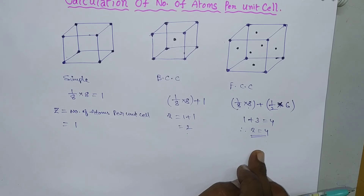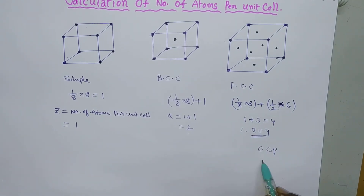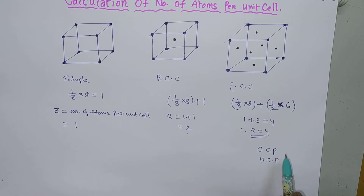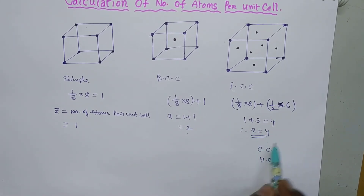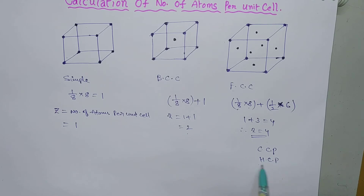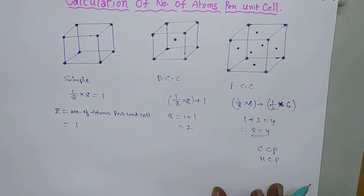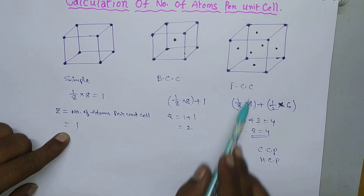For cubic close packing (CCP) or hexagonal close packing (HCP), the arrangement of atoms resembles the face-centered cubic structure. Therefore, for these two also, the effective number Z = 4. So: simple cube Z = 1, BCC Z = 2, FCC Z = 4.